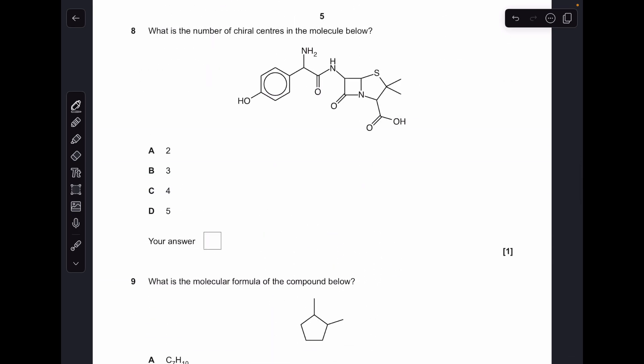Number eight. We're looking for carbon atoms that have four different groups attached. We've got four chiral centers in this molecule, so the answer was C.